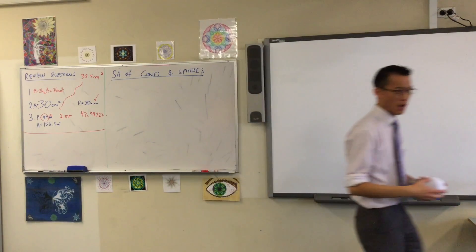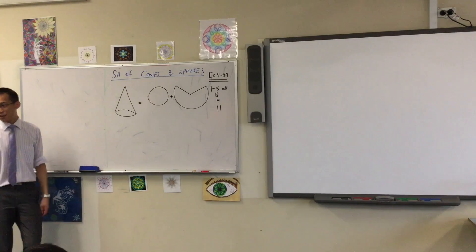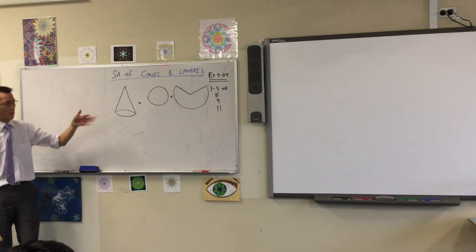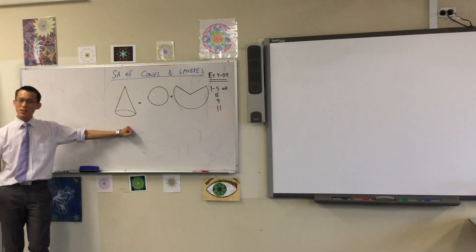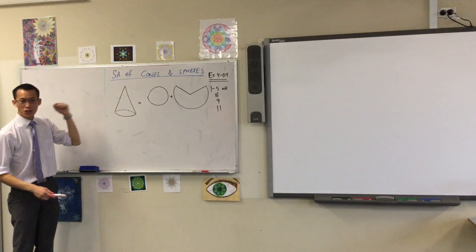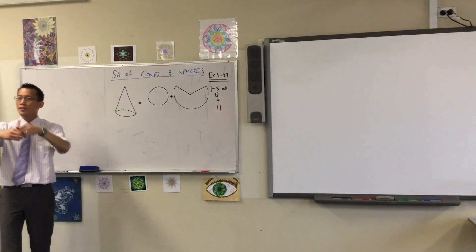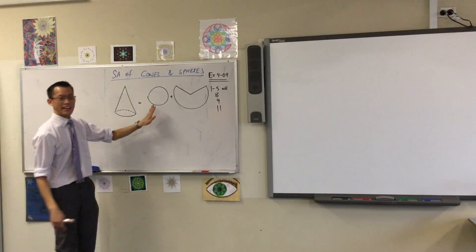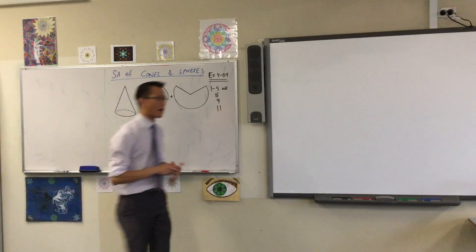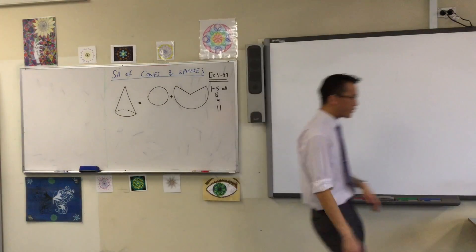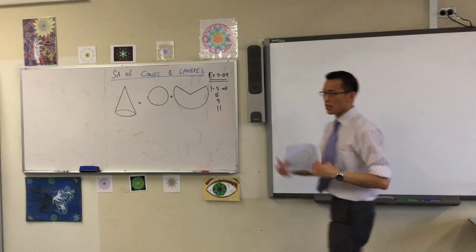So if you have a pair of scissors, what we're looking at here is just the cone - we'll get to spheres later on. Just like every other surface area we've looked at, you can take the 3D shape, unfold it which gives you the net, and then look at each of the components. When I gave you this to begin with, it looked like this.